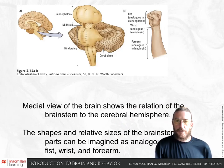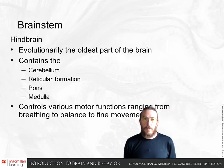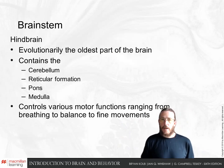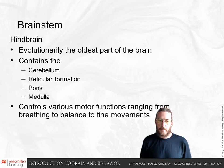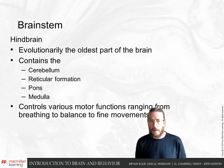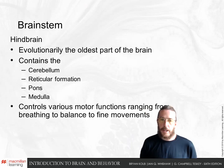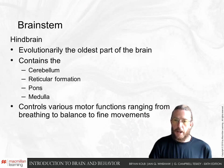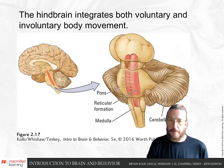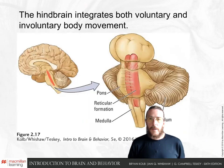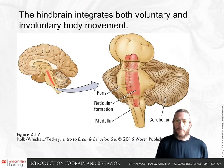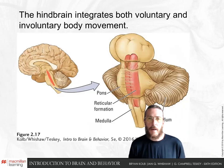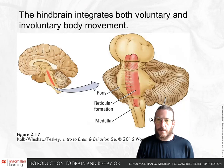The hindbrain is the evolutionarily oldest part of our brain. It contains the cerebellum, the reticular formation, the pons, and the medulla. These control various simple motor functions like breathing and fine movements. In this area we integrate voluntary and involuntary bodily movements and send those commands down to the body.